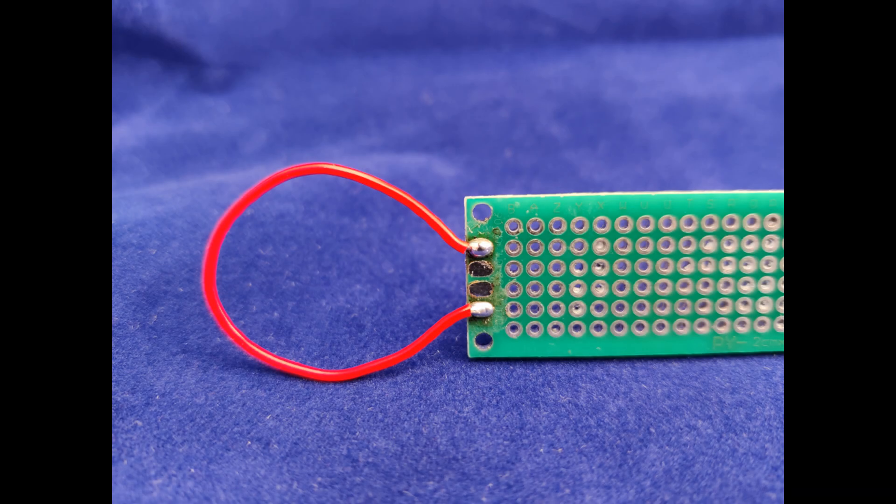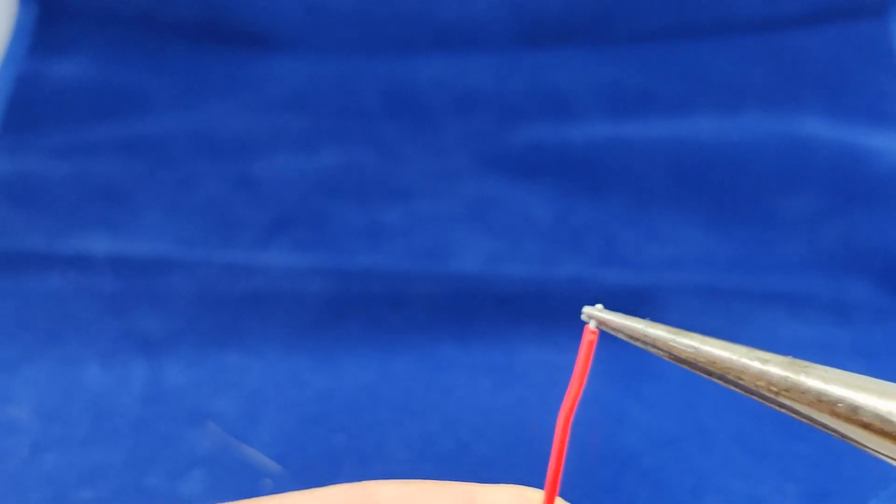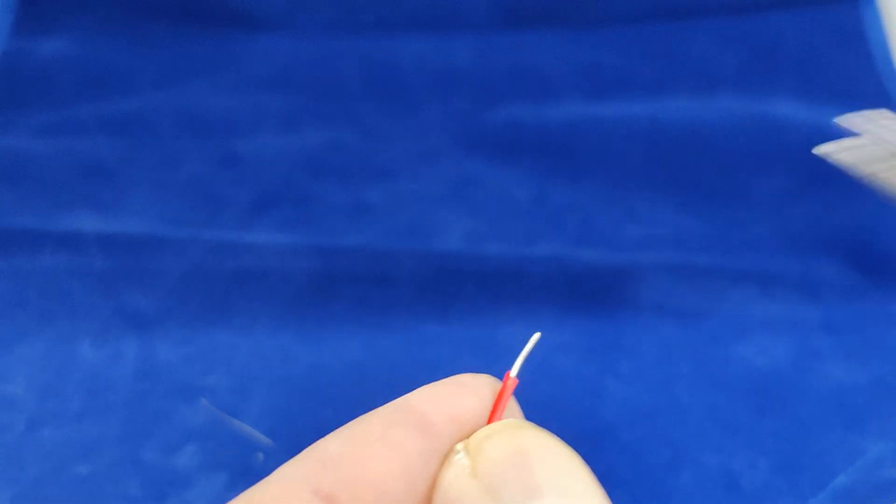Now sometimes it's important to have the insulation right up to a solder joint. So the last tip I have for you is how to avoid melting the plastic in this situation. You strip the insulation back to the correct length, grip the conductor with pliers and then use your nail to pull the insulation further back so it's out of harm's way.